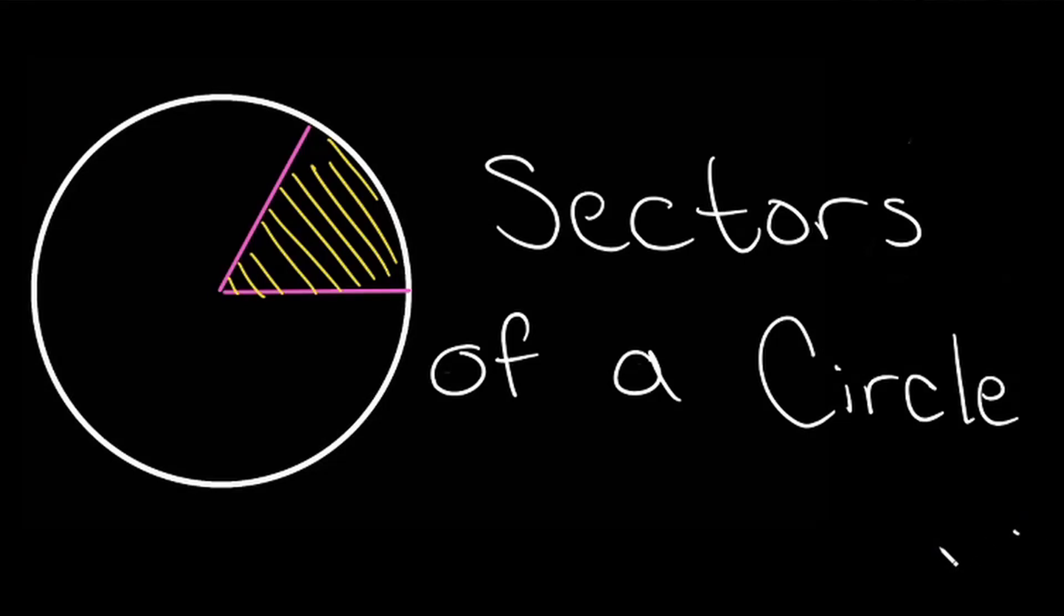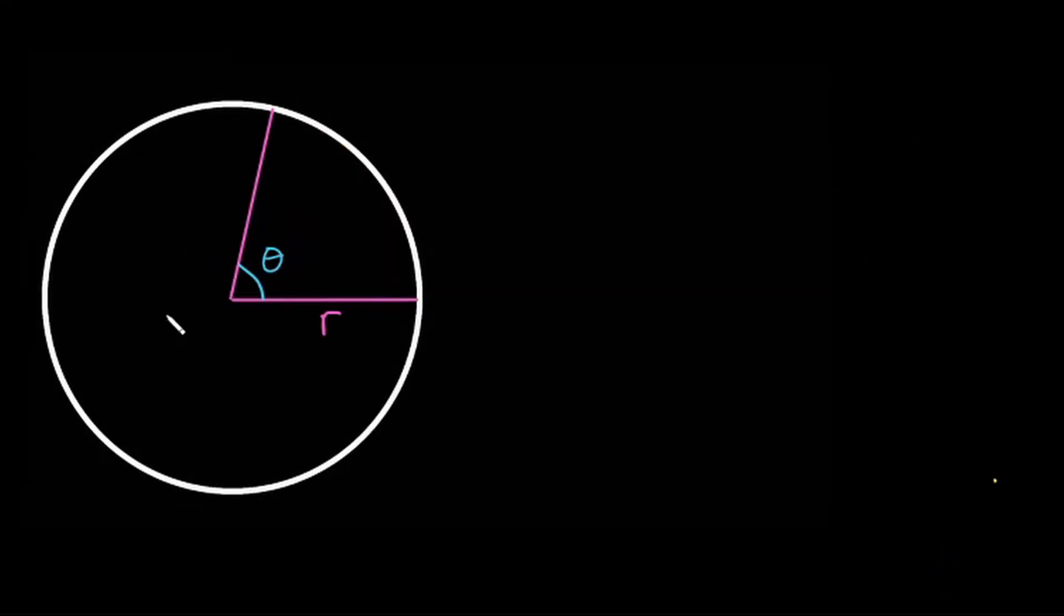Sectors of a circle. We have a circle here with radius r, and we have an angle theta. And we are asked to find this area here.